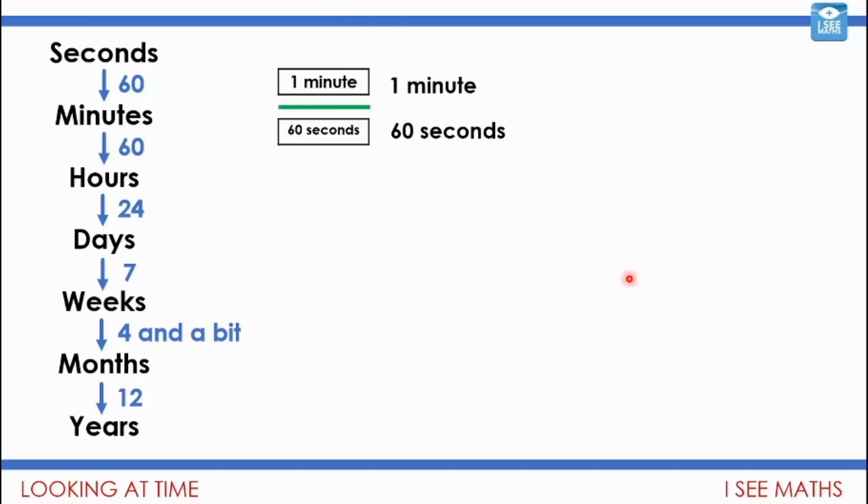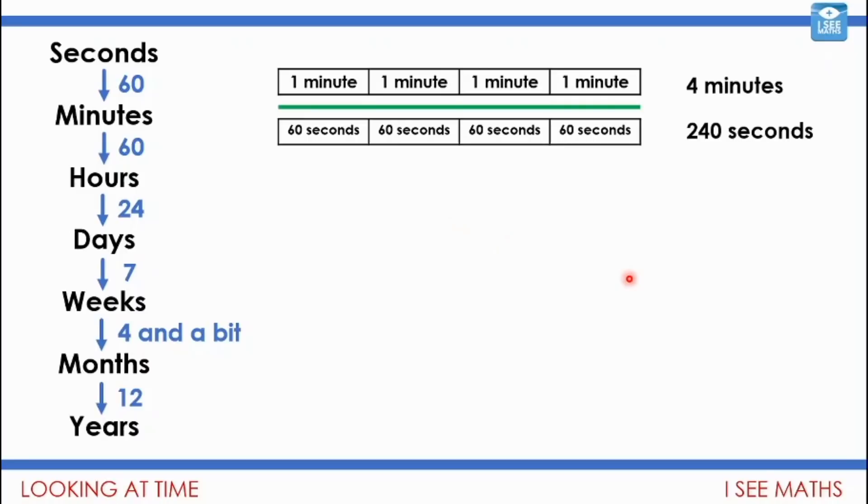If I extend that green line, there's two different ways I can describe this length of time. I could say this is four minutes—four lots of one minute. Equally, four minutes is 240 seconds because each minute is 60 seconds, so it's four lots of 60 seconds. Four lots of 60 is 240.